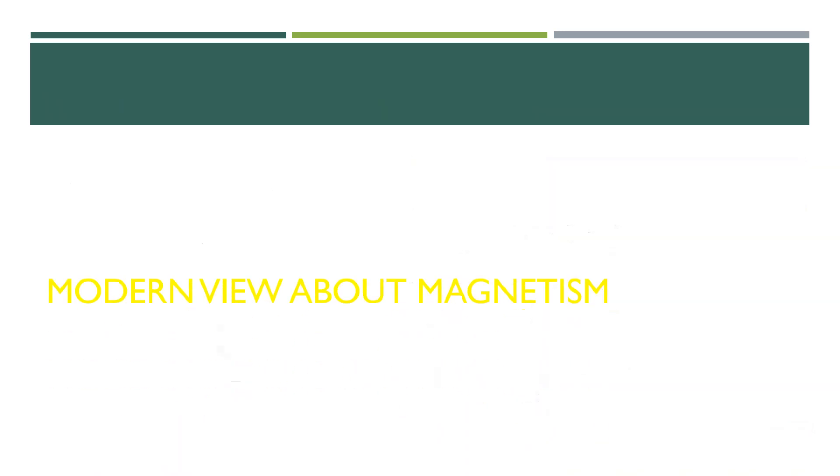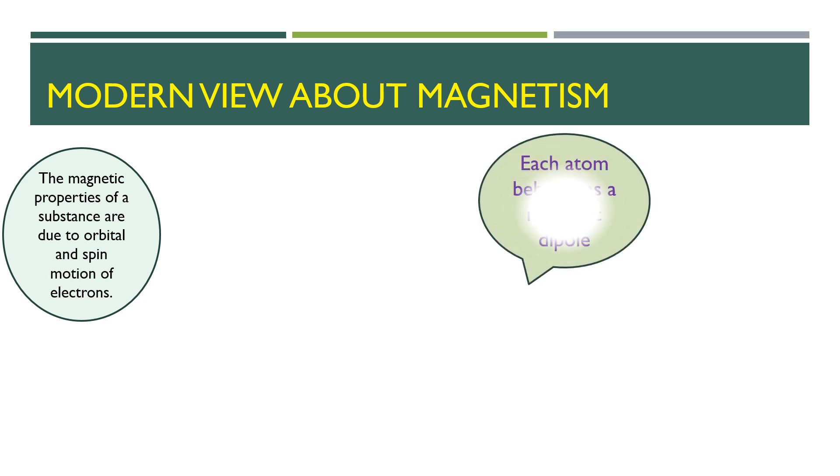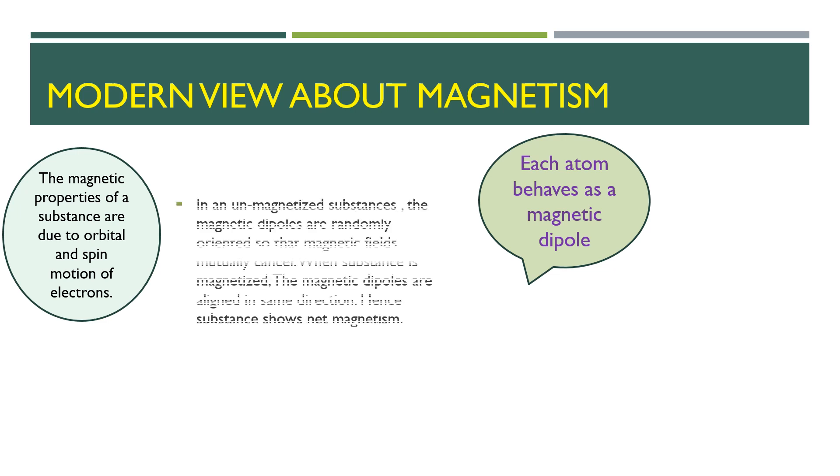Here is the modern view of magnetism: that magnetic properties of the substances are because of the motion of the electrons. This motion, which is both orbital and spin, makes each atom like a current loop; that is, it behaves as a magnetic dipole.